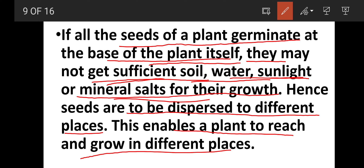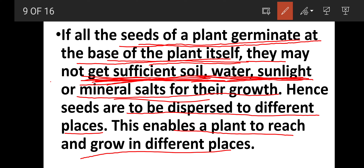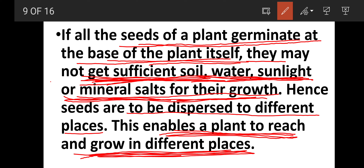If all the seeds of a plant germinate at the base of the plant itself, they may not get sufficient soil, water, sunlight, or minerals for their growth. The seeds need to be dispersed to different places. This enables plants to reach and grow in different places. These are the two advantages.